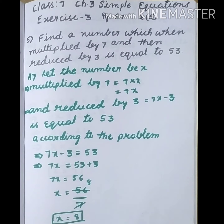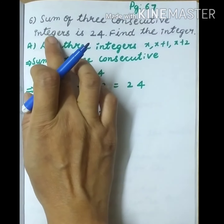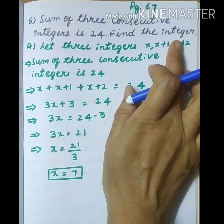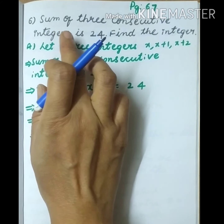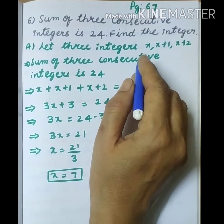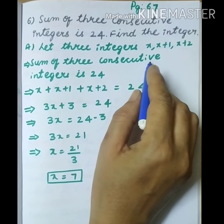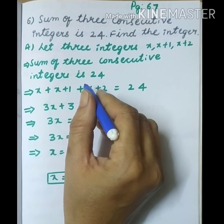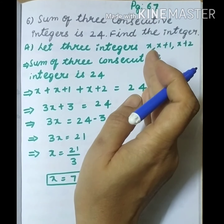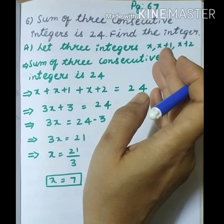Next question: the sum of 3 consecutive integers is 24 — find the integers. First, what are consecutive integers? Let the 3 integers be x, x plus 1, and x plus 2. Consecutive means one after another — 1 after 1, more after that. What comes next is called the consecutive number.